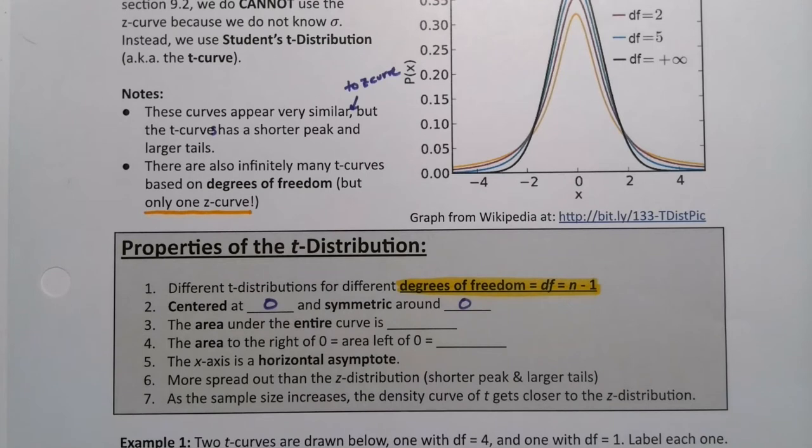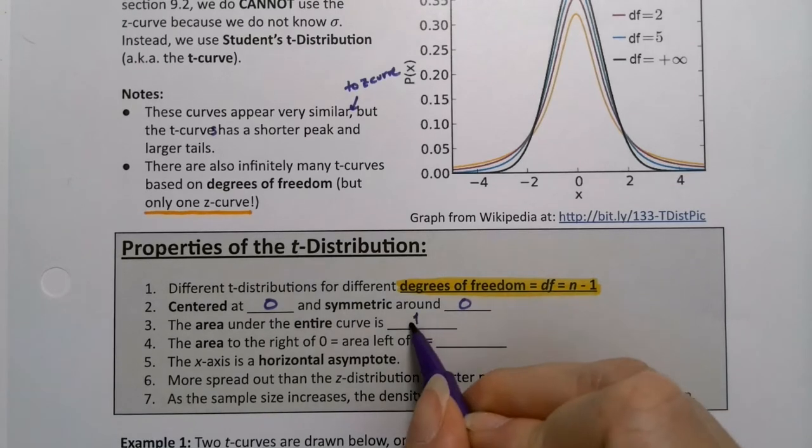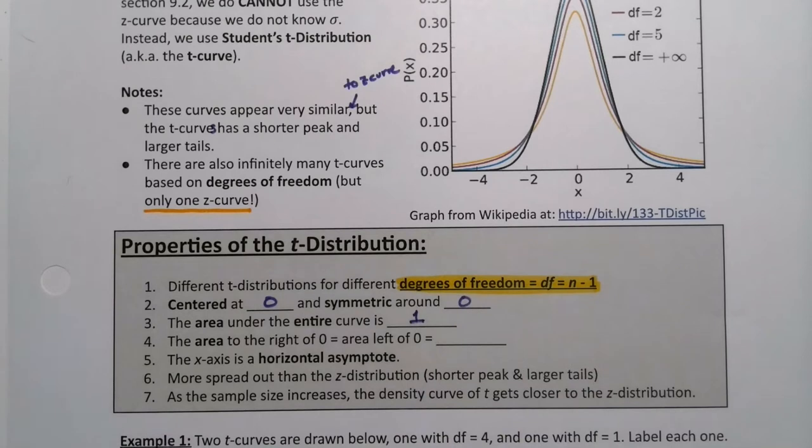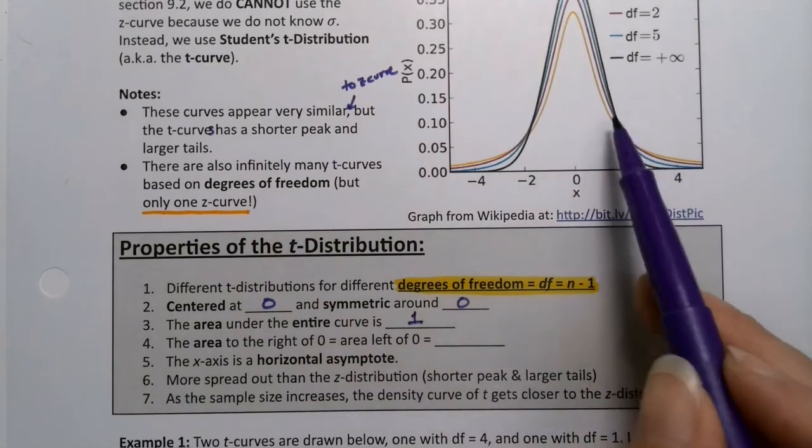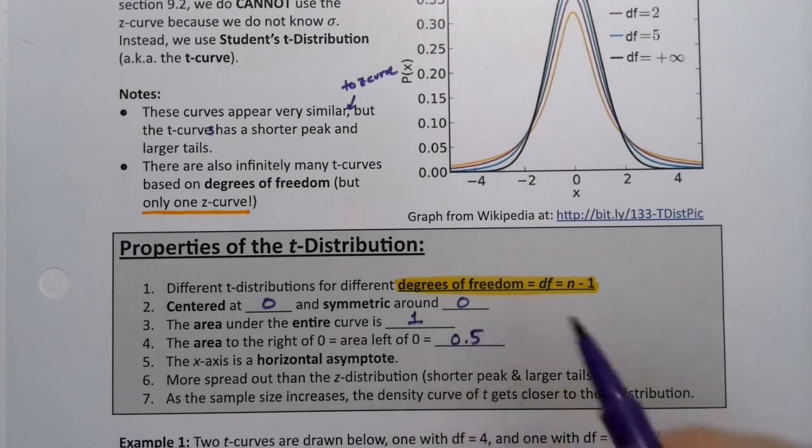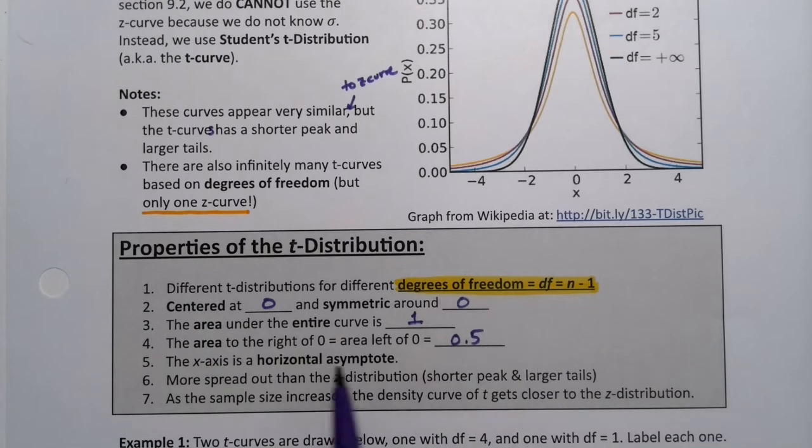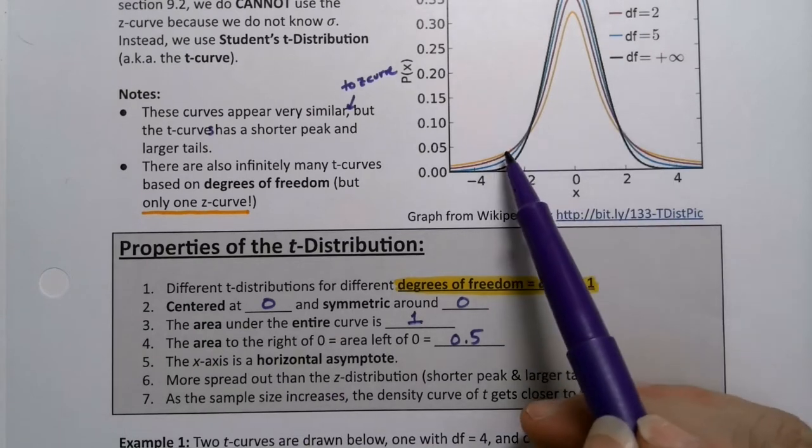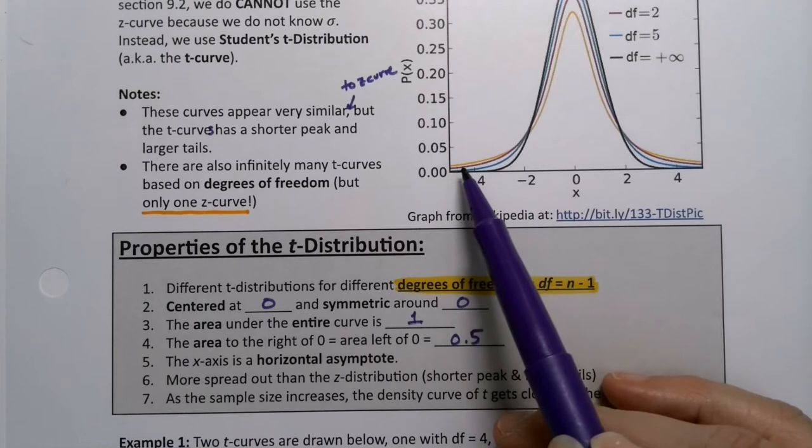The area under the t curve, well it's still a probability distribution, and if there's one thing we learned is that probability distributions have to have the entire area under the curve be one. Probabilities have to add up to one. That means that the area to the right of zero under any one of these curves and the area to the left of zero would always be 0.5, because it's a probability distribution that's symmetric.